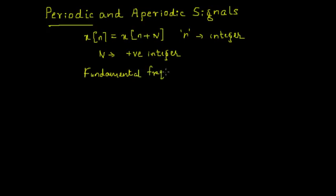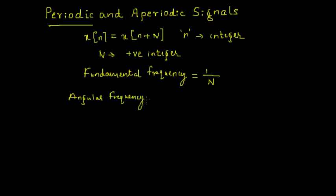The fundamental frequency of a discrete time signal equals 1 over N. We also have the angular frequency omega, which equals 2 pi over N, measured in units of radians. A signal which doesn't satisfy the condition x of n equals x of n plus N is known as an aperiodic signal.